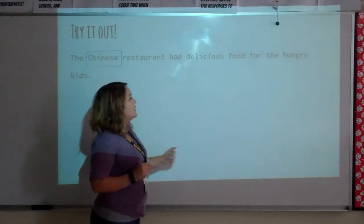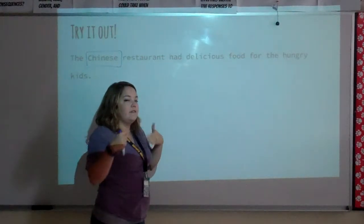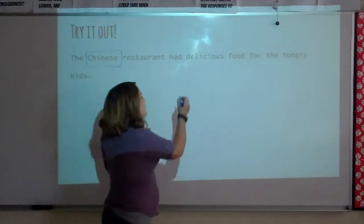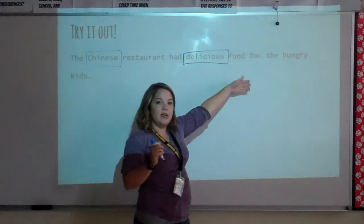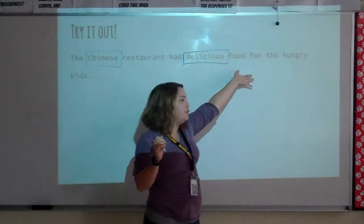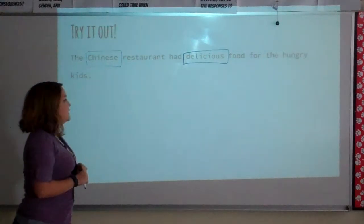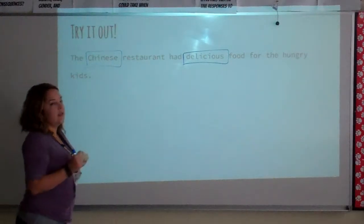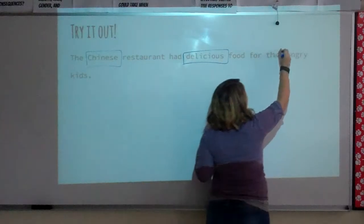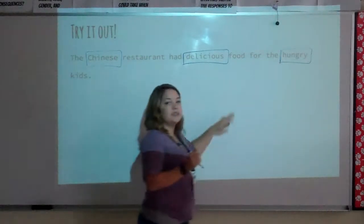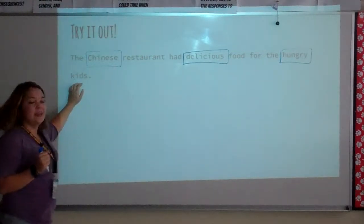I see another word that is modifying or describing something. Delicious is describing what kind of food this Chinese restaurant had. And then finally, I see one more in this sentence — hopefully you guys got this as well — which is hungry, which is describing the kids.